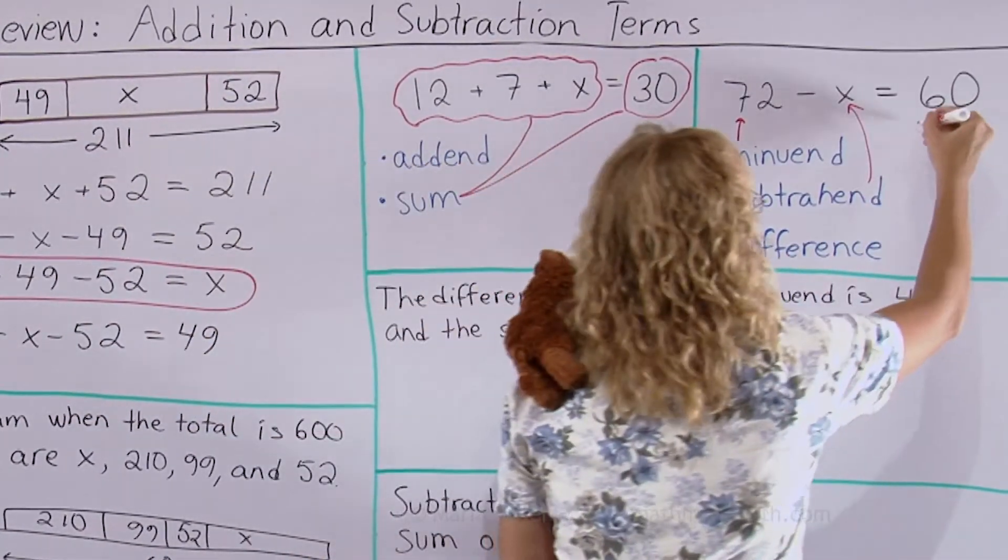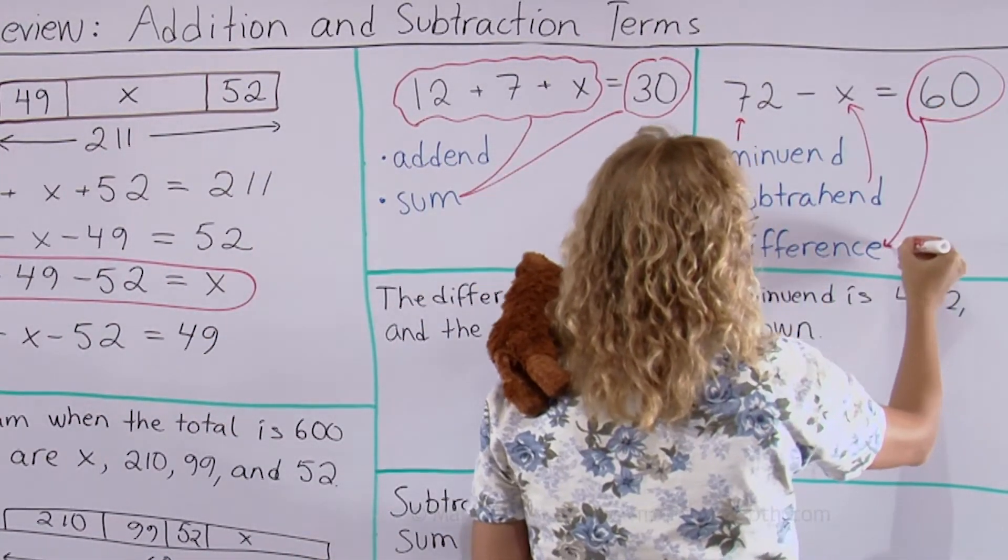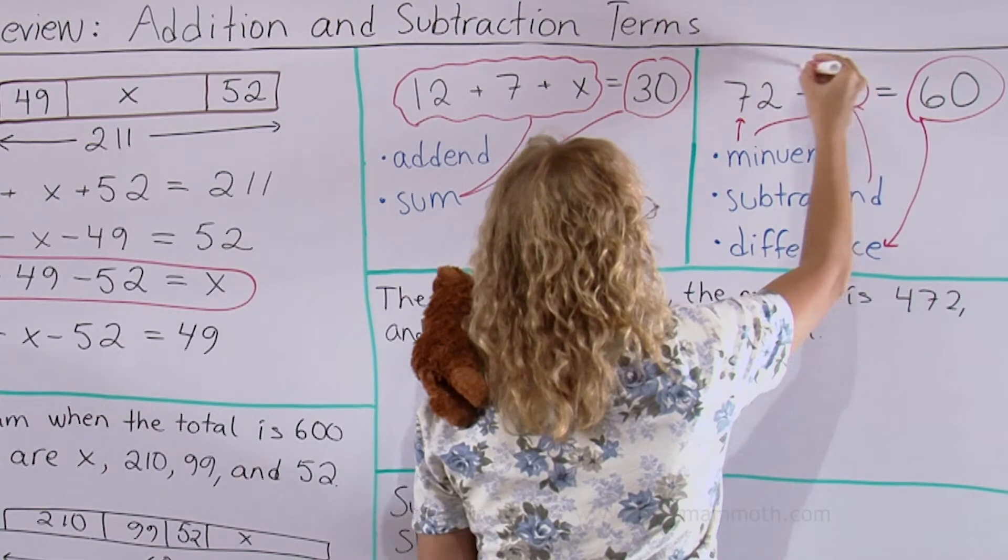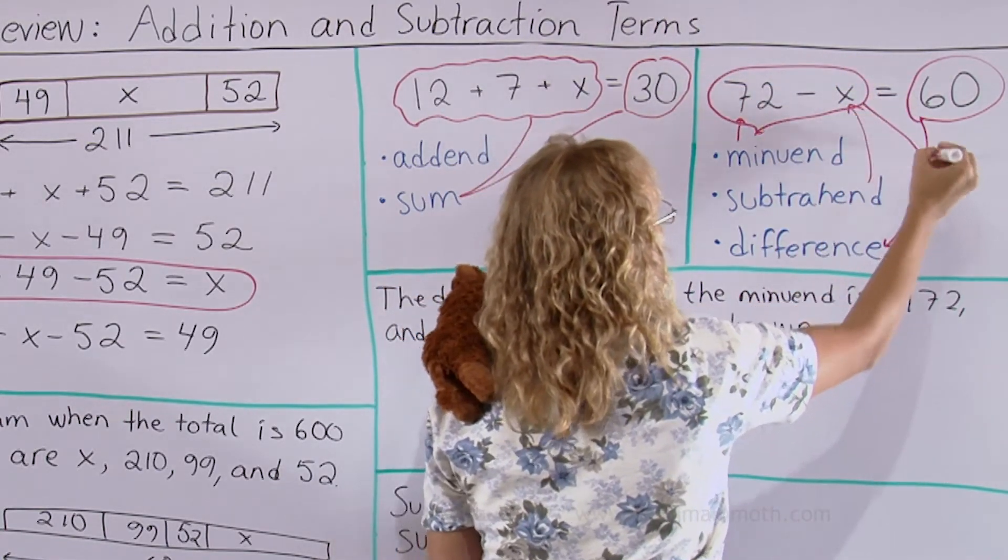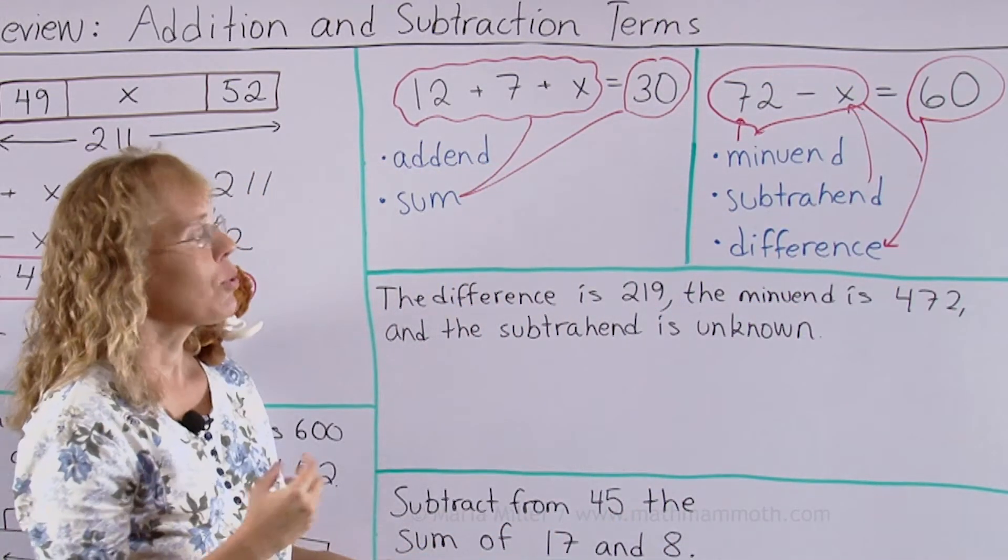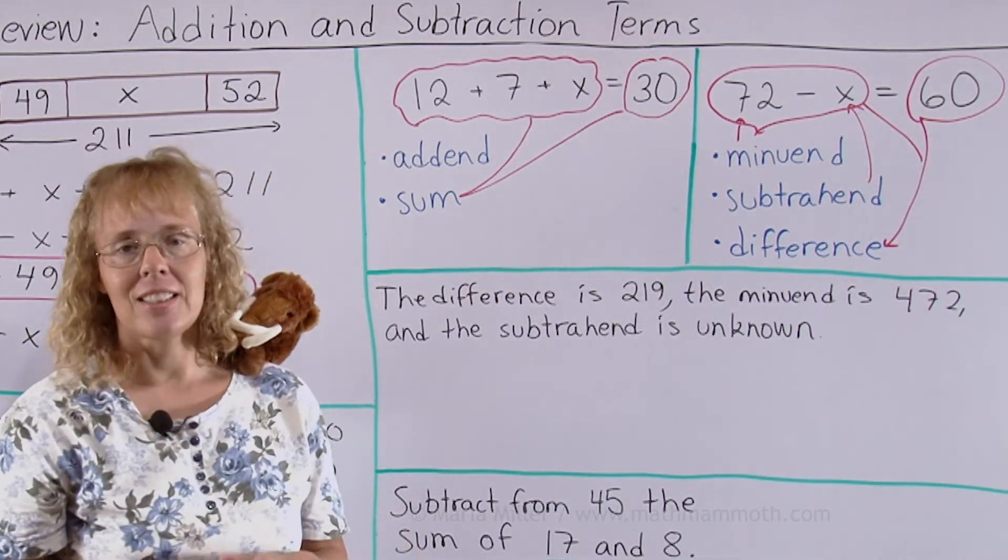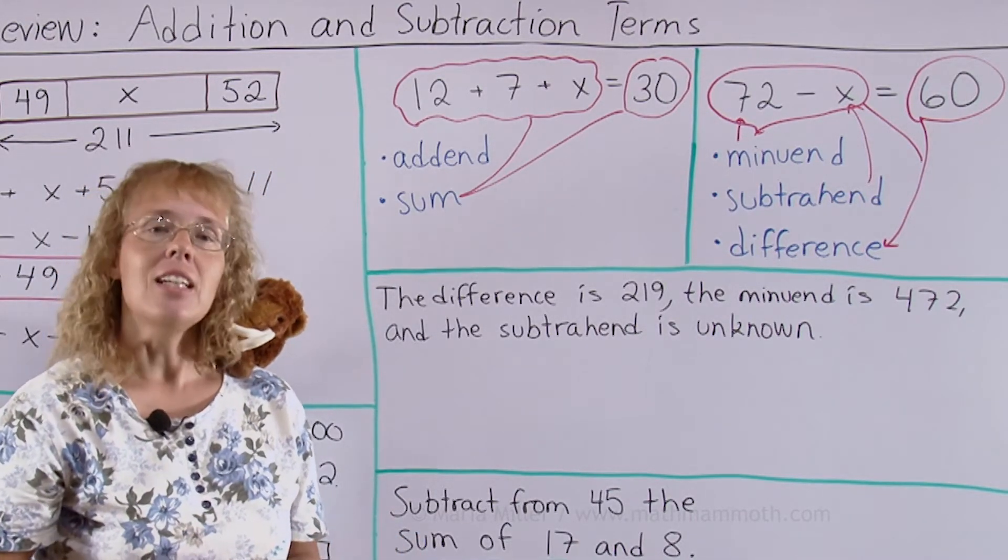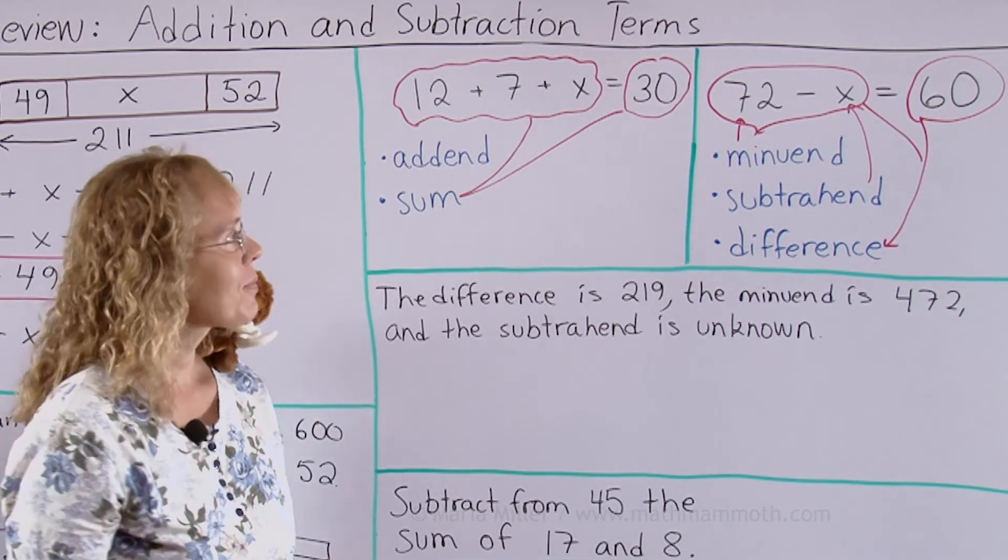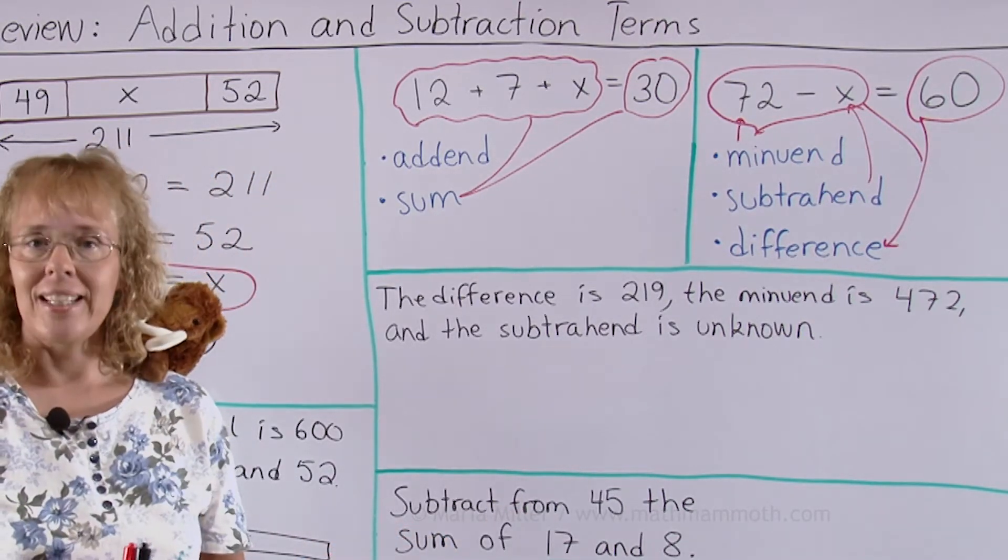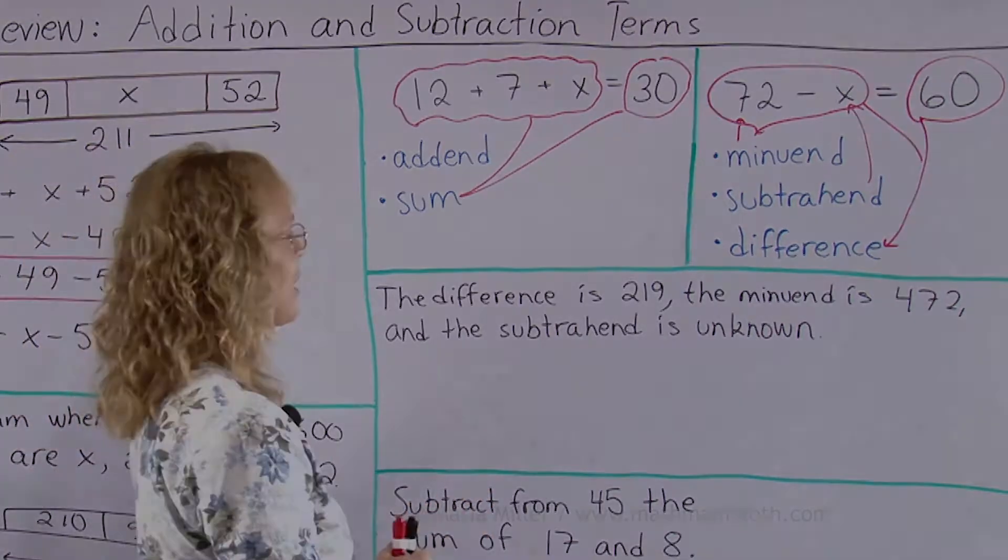The difference is then the answer but also the subtraction expression itself is the difference. 72 minus x is the difference. You can think of it as the difference that hasn't been solved yet or the difference written out. Or we also say the difference of 72 and x is 72 minus x.